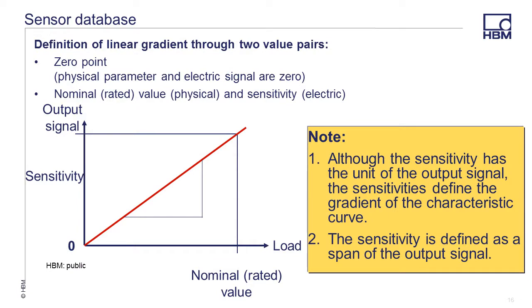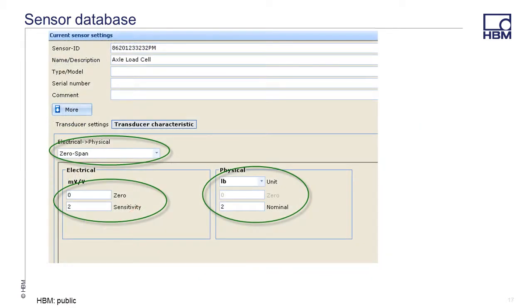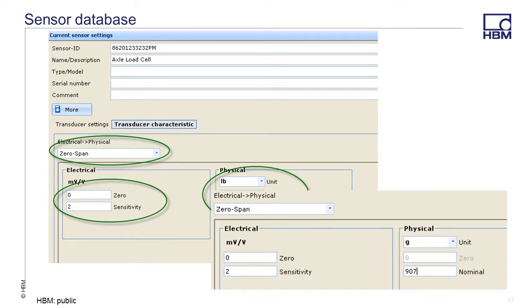The definition of a linear gradient through two value pairs: the zero point and then the nominal value, which is sensitivity, shows a relationship between load and output signal. When using the zero span setting, enter the electrical and physical settings from the transducer's data sheet or calibration sheet. In this case, the axle load cell has a nominal value of two pounds with an output of two millivolts per volt. If a different engineering unit is desired, the nominal value should be converted as required. For this example, it was desired to have the engineering units of grams, so the nominal value should be entered as 907.